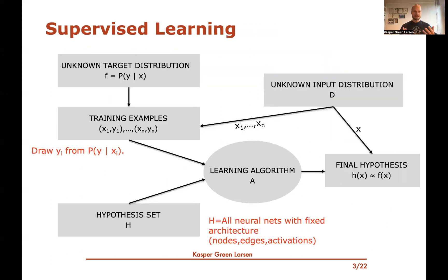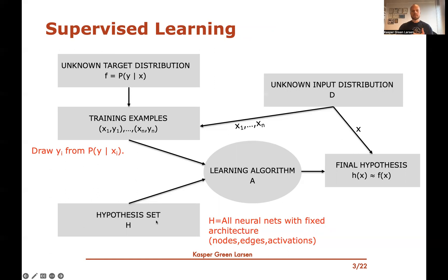If we go back to the figure we've seen on supervised learning, the basic setup when we do supervised learning with neural nets is that the hypothesis set H will be all neural networks with a fixed architecture. So the nodes, the edges, and the activations are already chosen and fixed, and we have a hypothesis for every choice of the weight parameters.